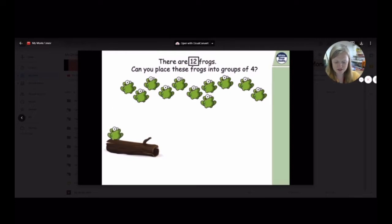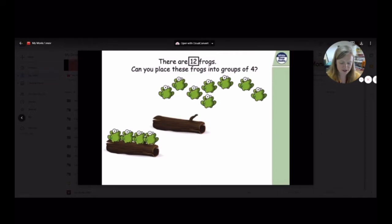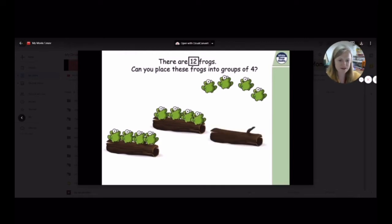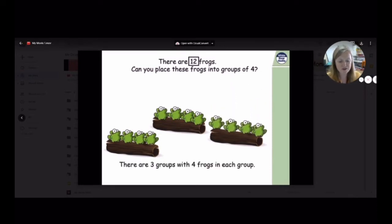Four frogs onto the first log, please. One, two, three, four. Great. We need another log, please. Off you guys, the next lot of four, off you go. One, two, three, four. And finally, the last group of four onto your log. Brilliant. So, we have three groups of frogs with four frogs in each group.